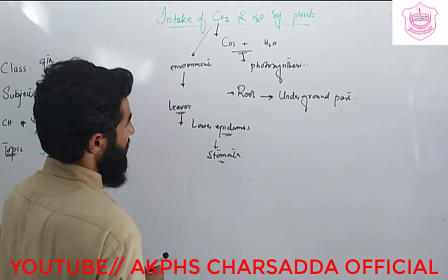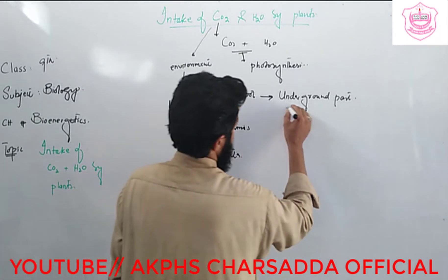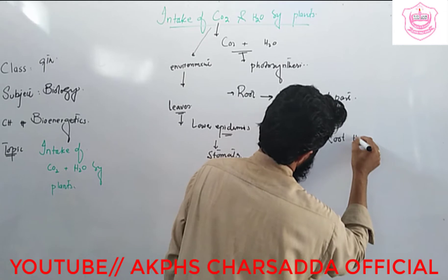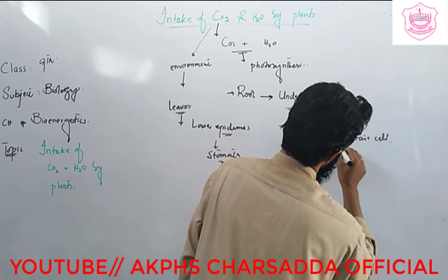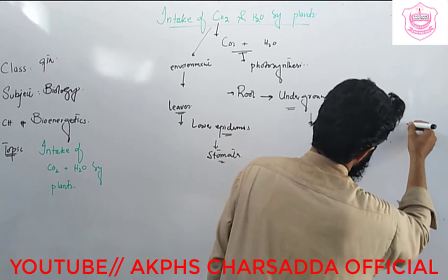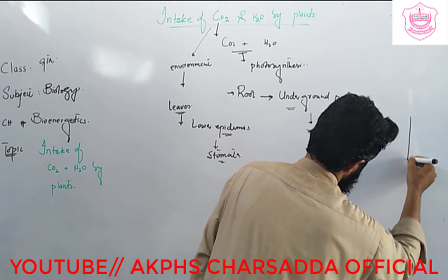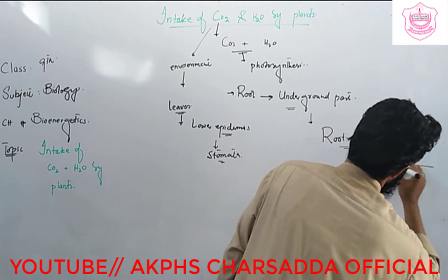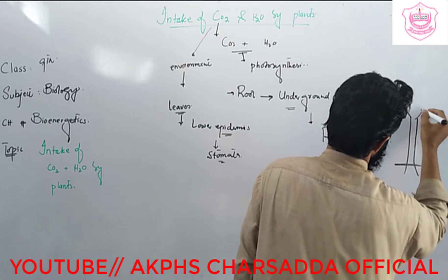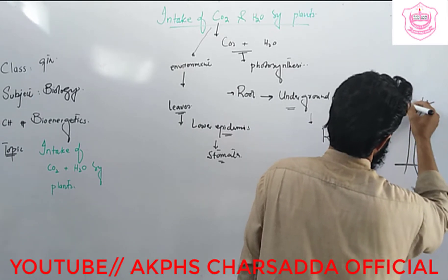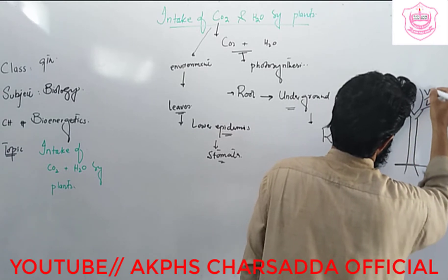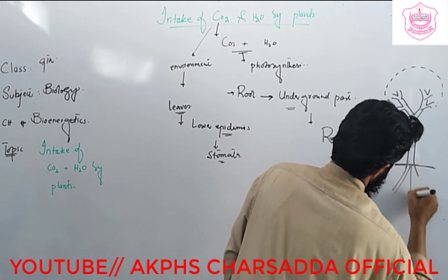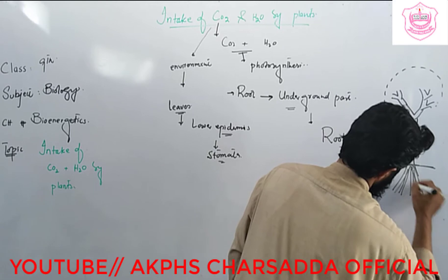The plant absorbs water by the root hair cell. There are two parts of the plant: one is known as the aerial part, and the other is the underground part. If you study the structure of the root and root hair cell, you can see both the root and root hair.